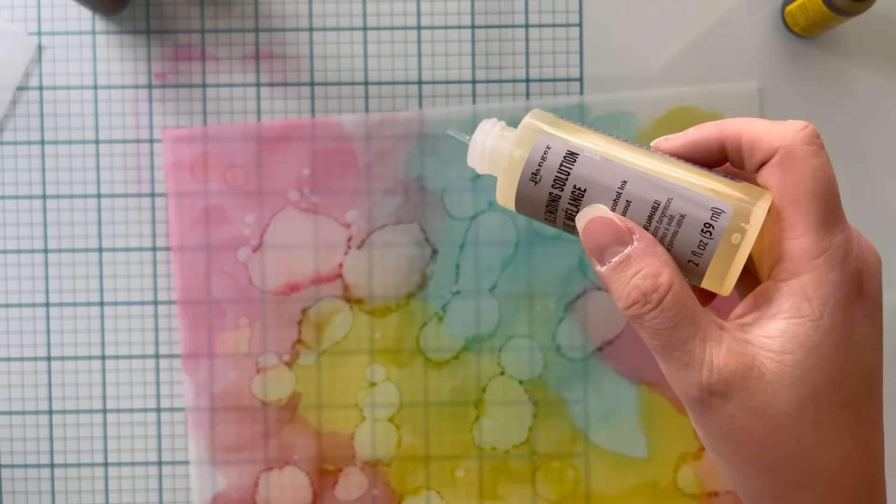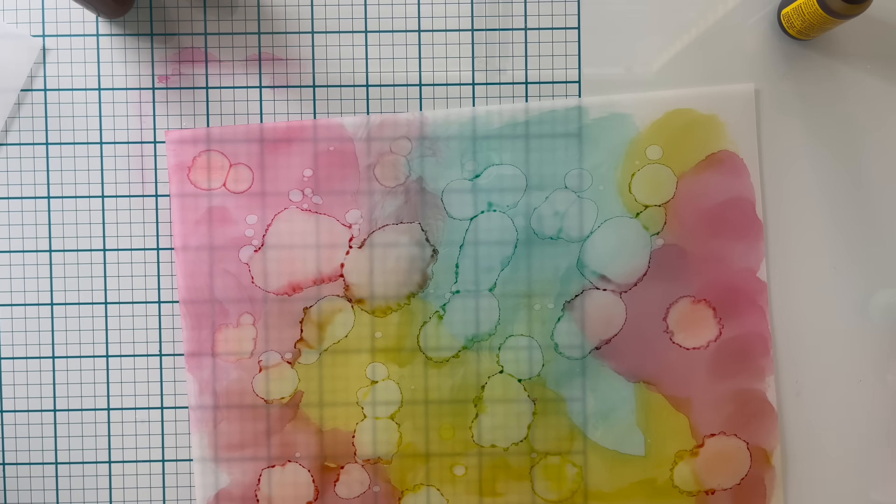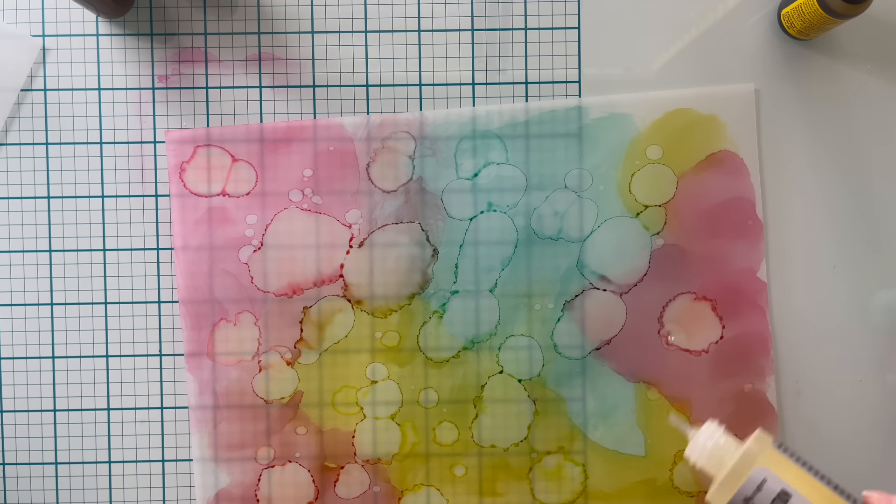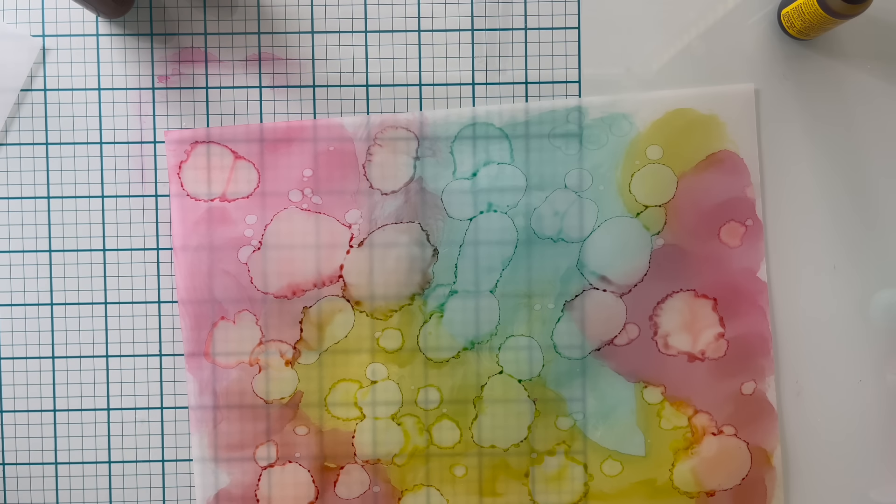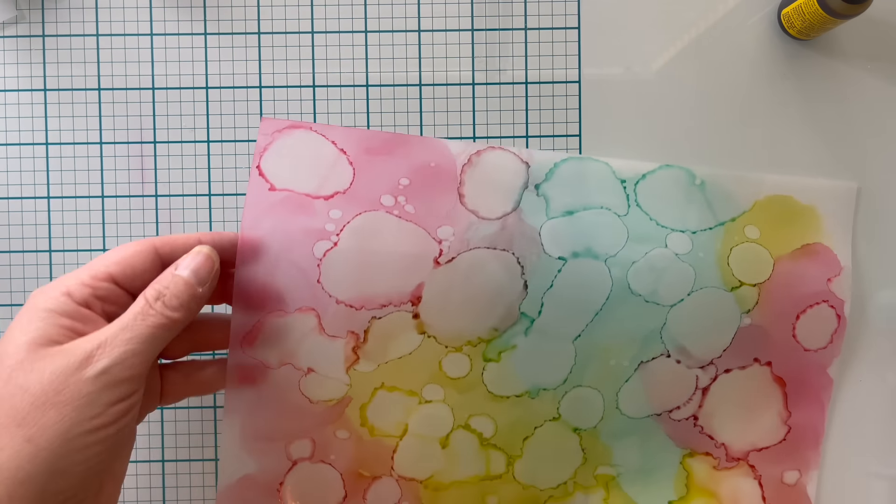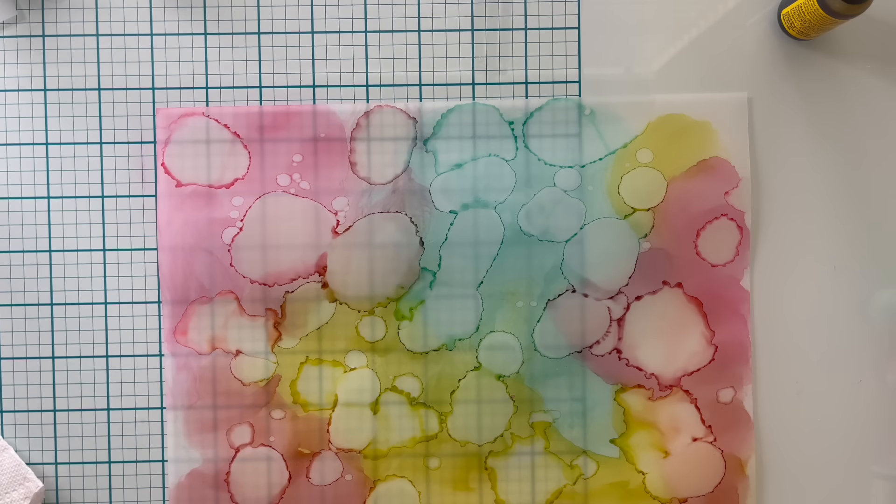Now, I do have blending solutions, so I thought I'd give that a whirl, too. Let's add a little of this and see if I get anything different than what I did with the isopropyl alcohol. The blending solution seems to give the bubbles a little bit of a harsher edge, which I have to admit is kind of cool. Now, let's set this aside to dry.